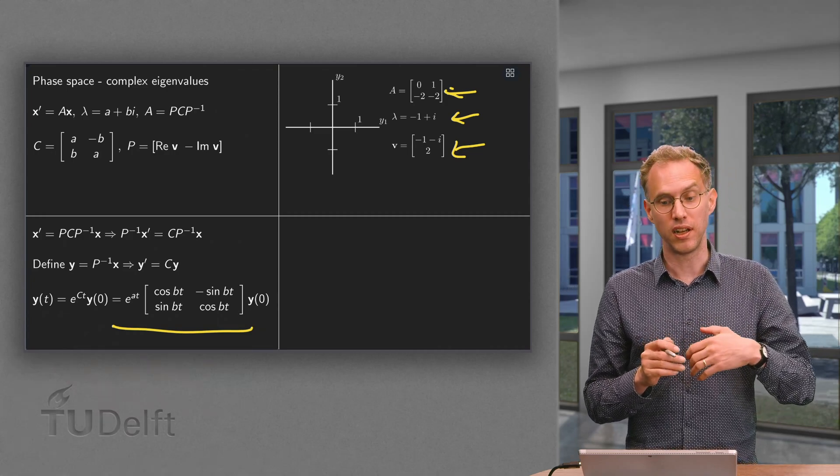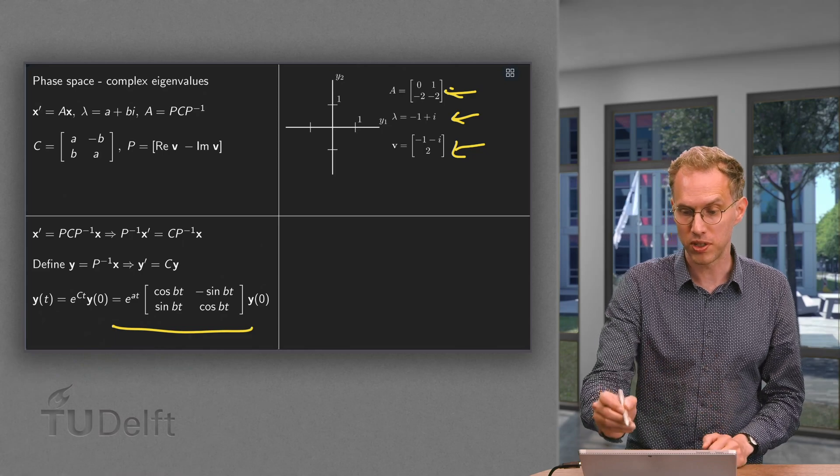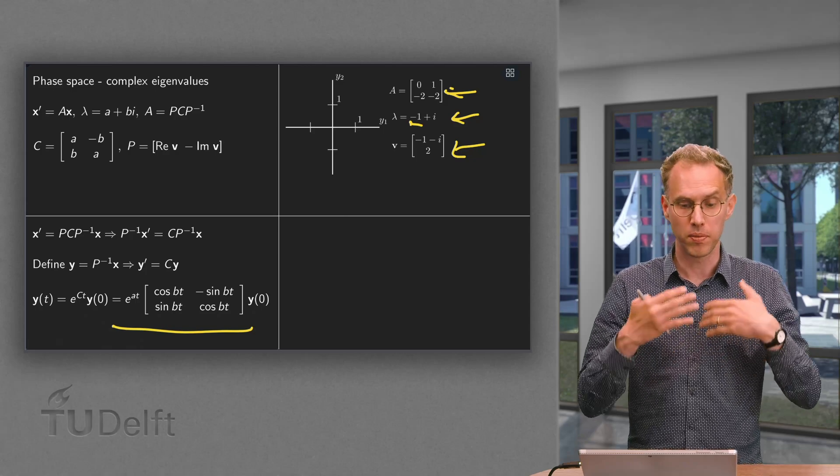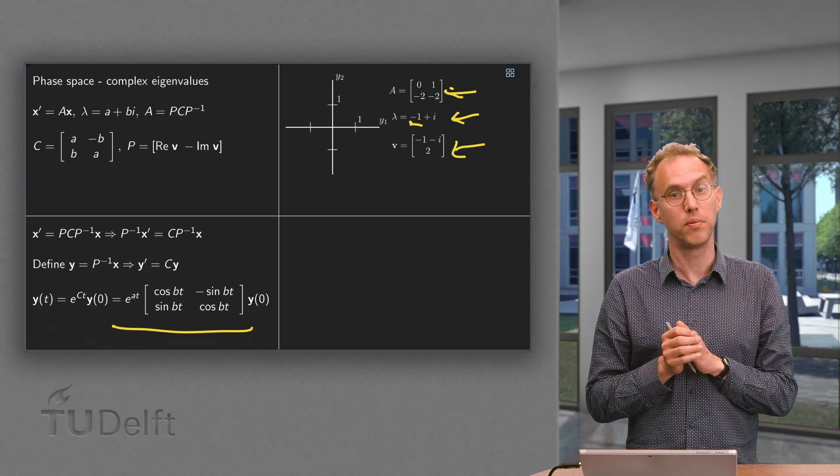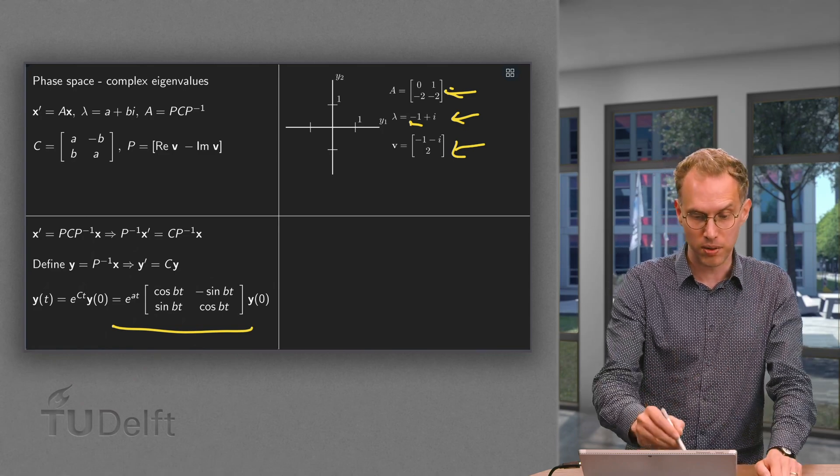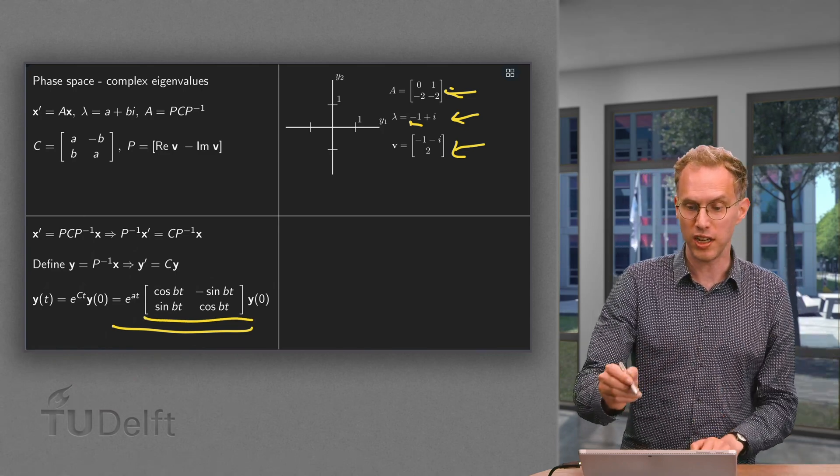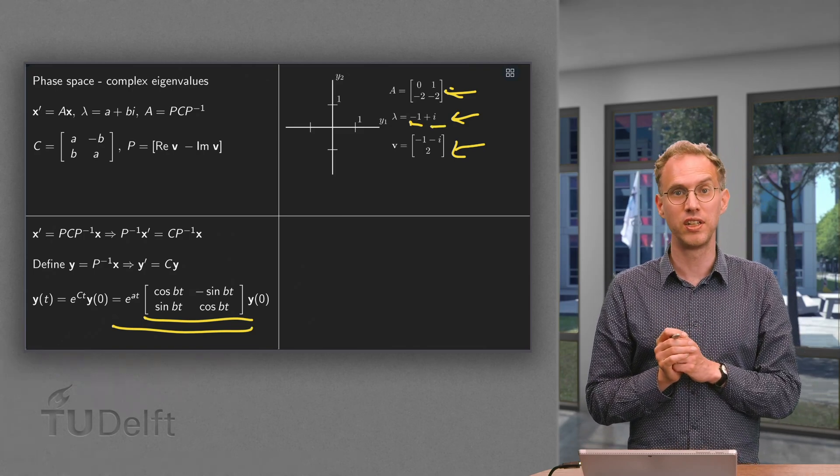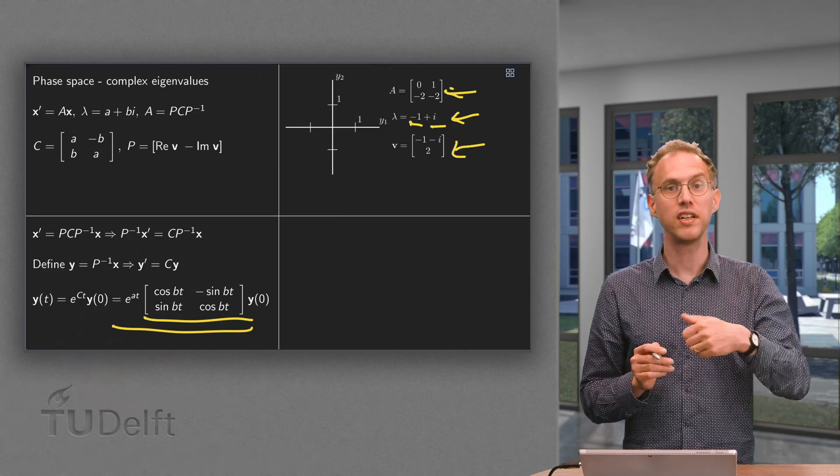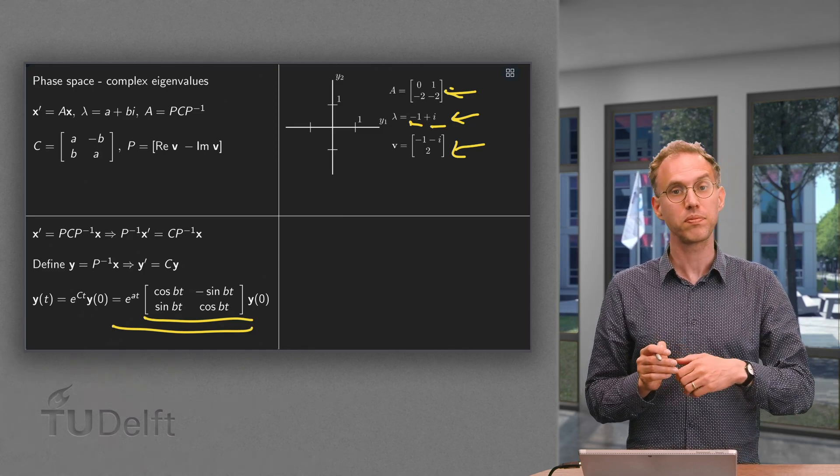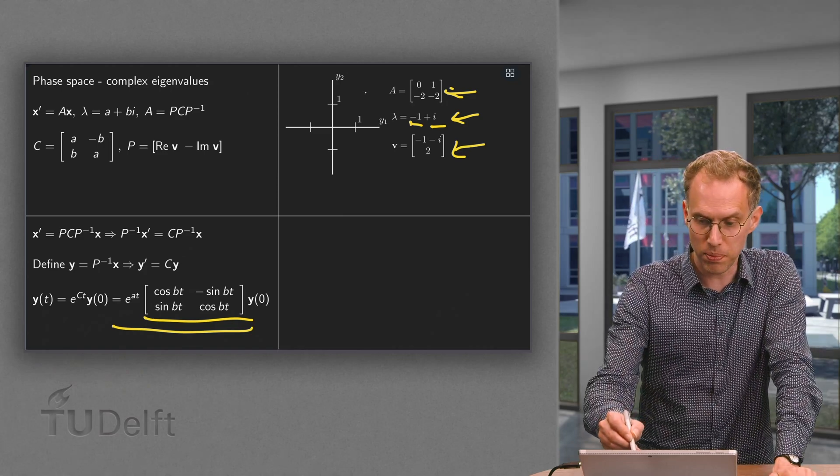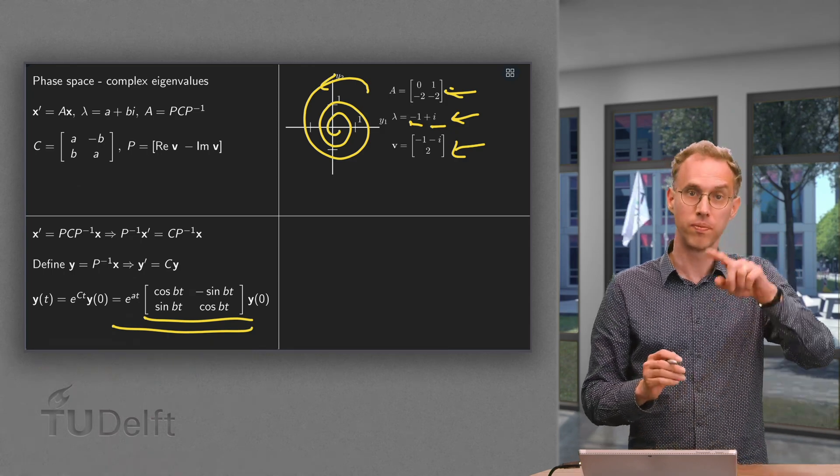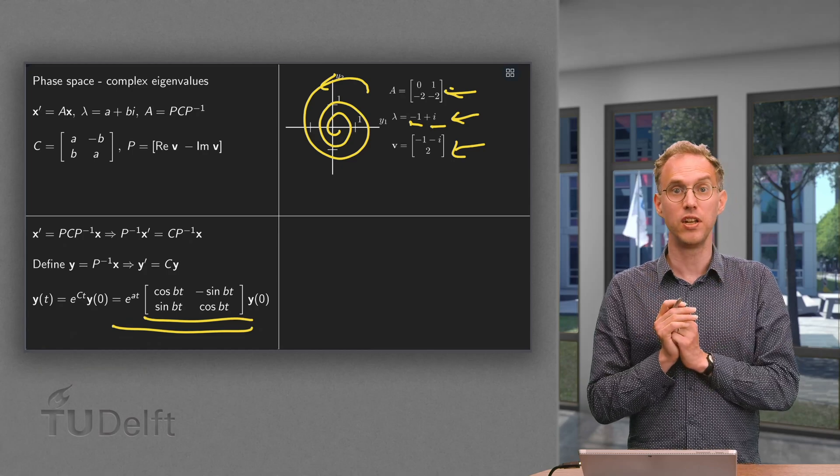The e to the power at is in this case e to the power minus t because a equals minus 1. It's going to pull everything towards the origin. Because if t grows, e to the power minus t becomes smaller. Then this matrix over here is going to rotate. In this case b equals 1. So our cosine bt is positive. So we are going to rotate counterclockwise. So we are doing two things. We are rotating counterclockwise in the y space. And we are going towards the origin. So suppose we start somewhere over here. And the face space looks like this. Rotating counterclockwise towards the origin. So that is in the y variables.